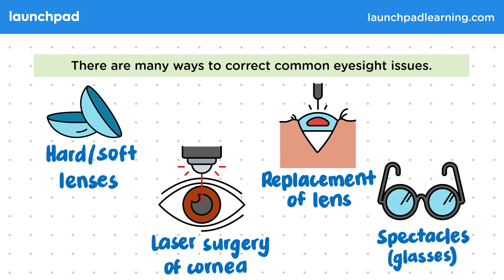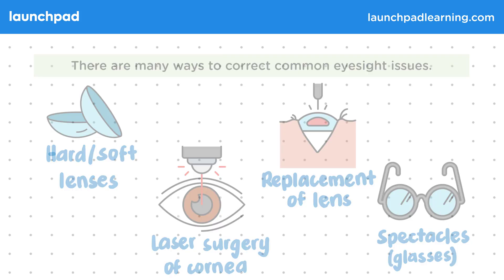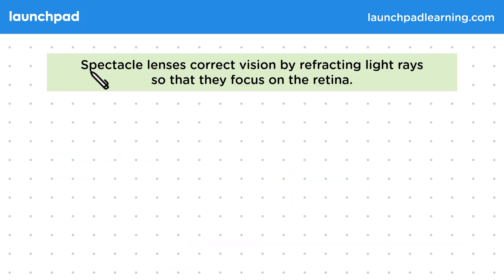How can we use ray diagrams to show how glasses work? Spectacle lenses correct vision by refracting light rays so that they focus on the retina.